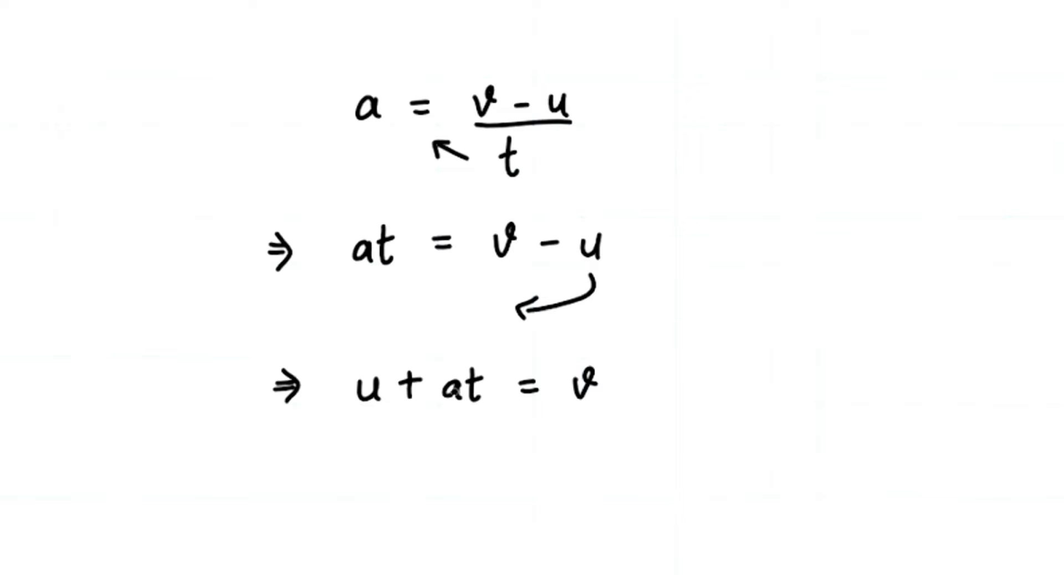So minus u became plus u, our at is already positive. Now if we flip this, we get our equation which is v equals to u plus at, and done. That's how we can easily derive this equation of motion.